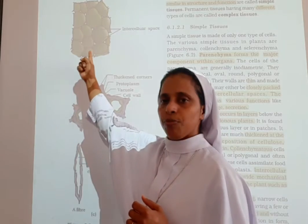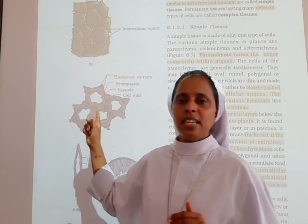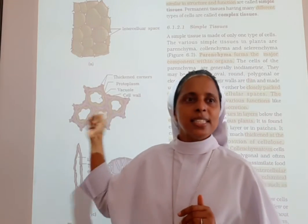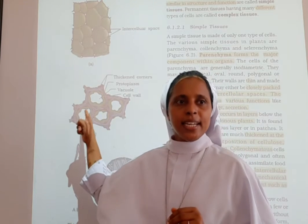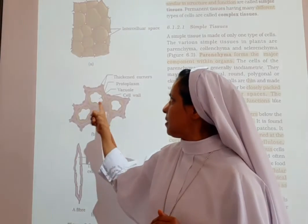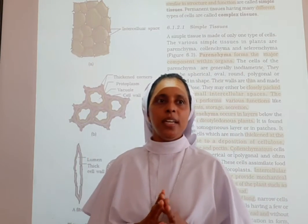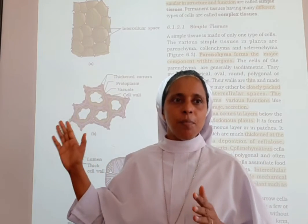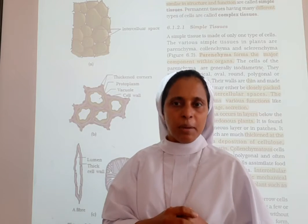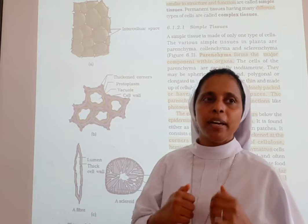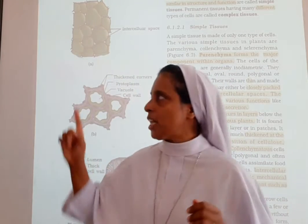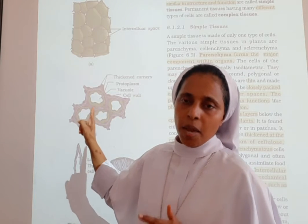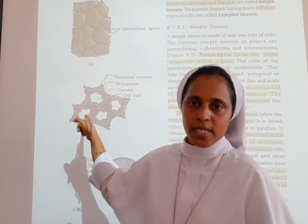Collenchyma occurs in layers just below the epidermis of dicotyledonous plants. Collenchyma cells are thickened at the corners due to deposition of cellulose, hemicellulose, and pectin. They may be oval or spherical in shape. The main function of collenchyma is to provide mechanical support to the plant. They do not have intercellular spaces as in parenchyma.